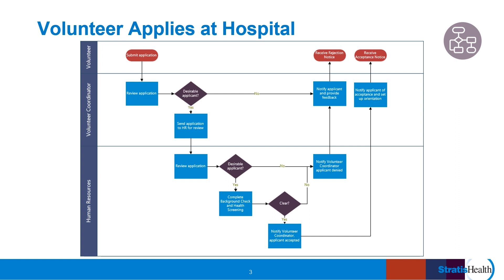If the volunteer coordinator determines the applicant is desirable, they forward the application to human resources for additional review. If human resources determine the applicant is desirable, a background check and health screening is completed. If the applicant is cleared, the volunteer coordinator is notified and reaches out to the volunteer to accept their application and set up orientation. If the applicant is not found to be desirable by HR or does not complete the background health check and screening, the volunteer coordinator is notified by HR and reaches out to the applicant to provide feedback. For this team's purpose, they have kept the flowchart at a fairly high level. In this example, the process begins and ends in the volunteer swim lane, as represented by the three red ovals, but that is not always the case.